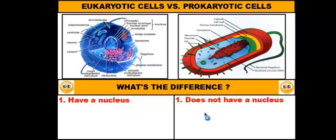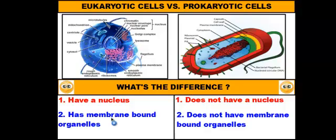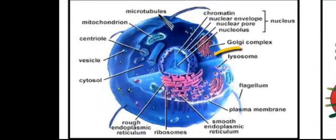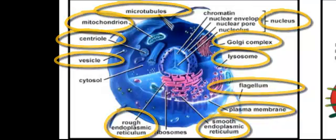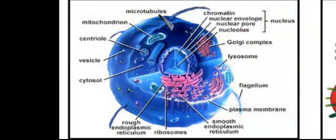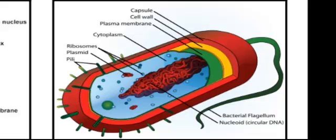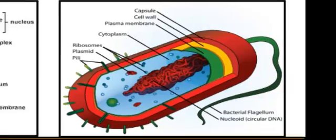A second major difference between eukaryotic cells and prokaryotic cells is the presence of structures called organelles. Eukaryotic cells have what are called membrane-bound organelles and these structures include things such as the Golgi complex, mitochondria, the nucleus, and the endoplasmic reticulum. However, if you take a look at the prokaryotic cell, you'll notice that it doesn't have any of these organelles inside of it. So, they're lacking in membrane-bound organelles.